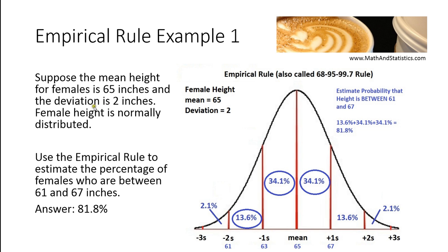Let's say the standard deviation in your data set is about 2 inches. Because we know female height is normally distributed, we expect most of the females we sample to be close to the mean height of about 65 inches. Some will be a little taller, some a little shorter, fewer will be a bit taller or shorter, and very few will be super tall or super short. The height of the curve tells you the frequency of that value, and this goes on to infinity in both directions.